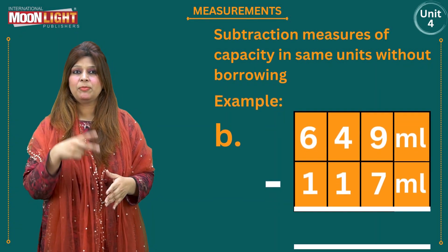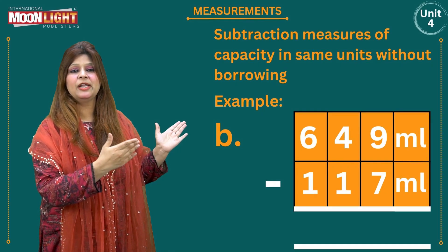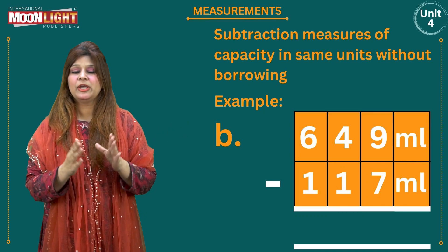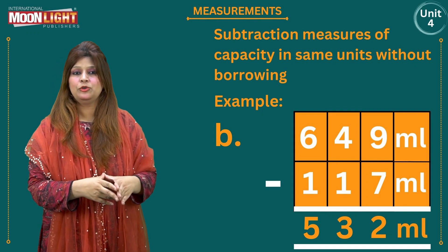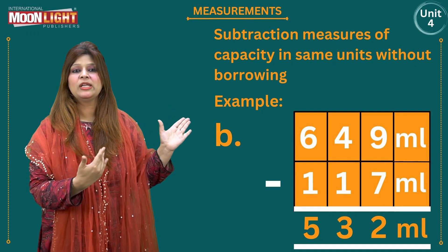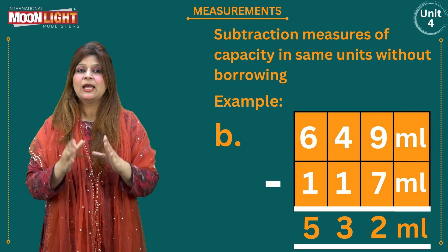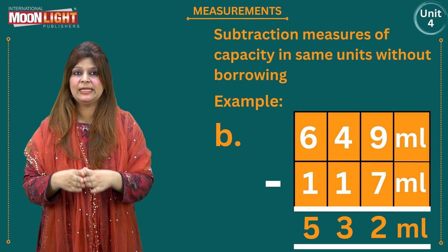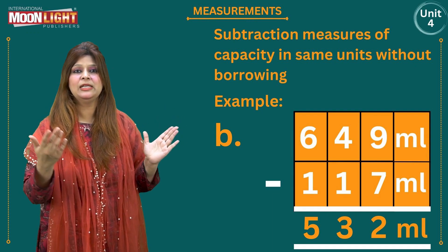For part two, six hundred and forty-nine millilitres minus one hundred and seventeen millilitres. Starting from the right: nine minus seven is two, four minus one is three, six minus one is five. Writing the unit of capacity — millilitres — the final answer is five hundred and thirty-two millilitres.